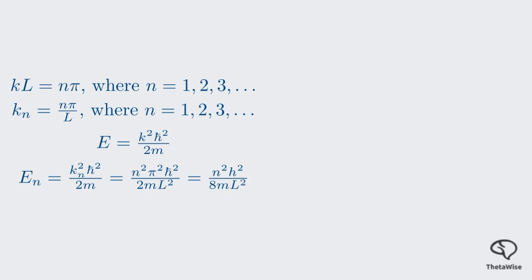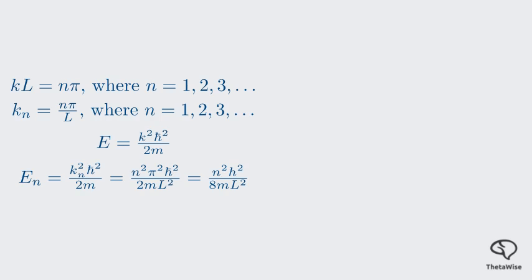And here it is. The energy levels Eₙ are quantized. The particle cannot have any arbitrary energy. It must be one of these discrete values. This is a profound result of quantum mechanics. Unlike a classical particle in a box that could have any energy, our quantum particle is restricted to an energy ladder. The lowest possible energy level is for n=1, and it's not zero. This is called the zero-point energy, and it means the particle can never be perfectly still. It's a consequence of the uncertainty principle.